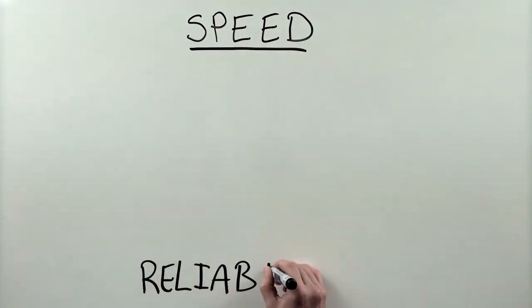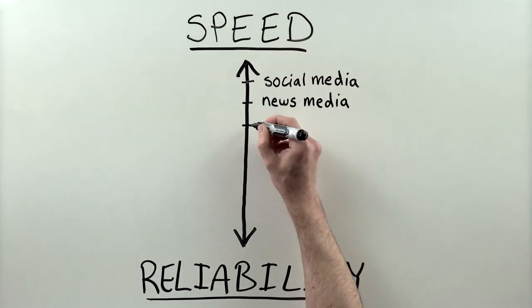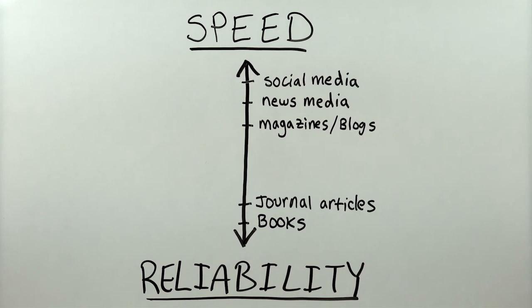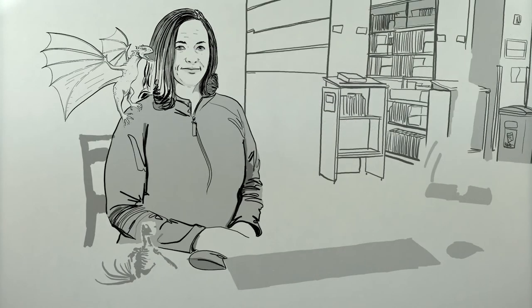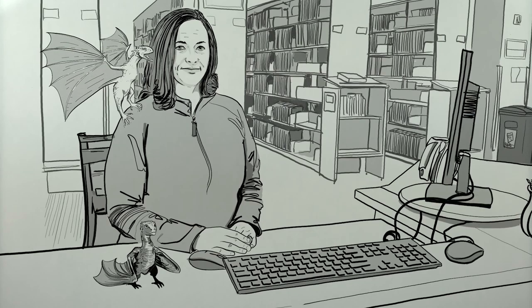So that's the information cycle. If you know where in the cycle a piece of information comes from, you'll be better equipped to understand its relative strengths and weaknesses. But wait, when it comes to determining reliability, every piece of information has to be evaluated individually, and a librarian can help you with that.